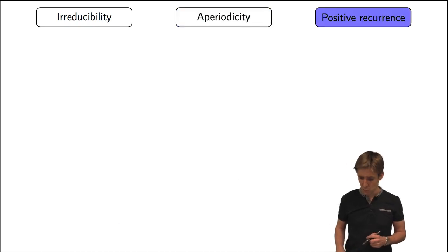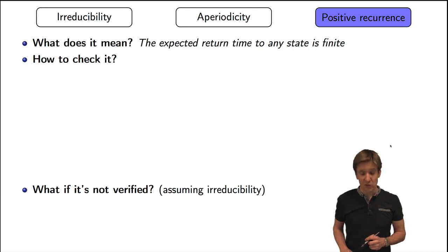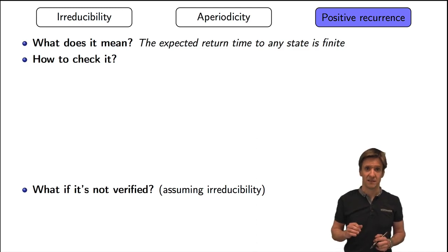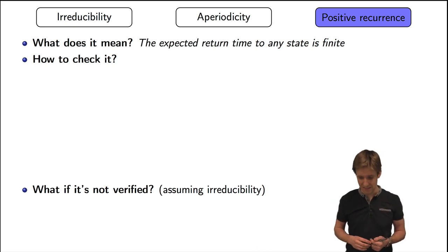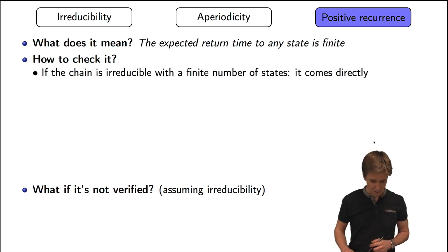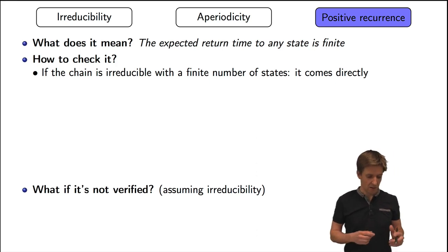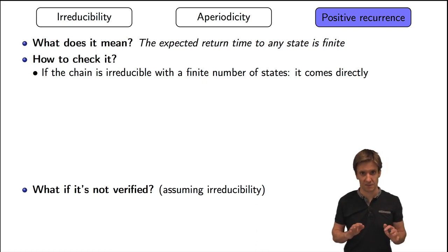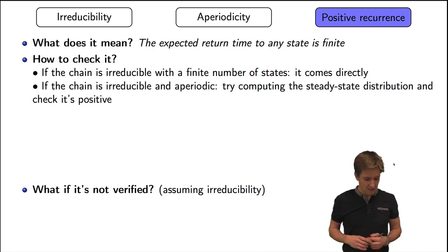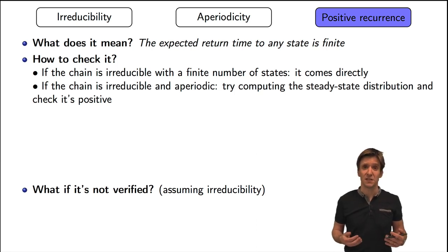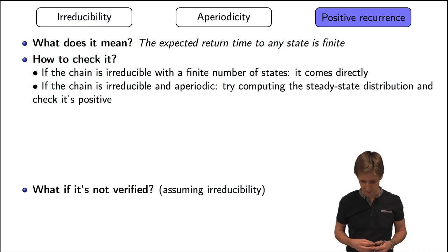Finally, the last condition we want is positive recurrence. It means that if I'm in a given state, the expected time before I go back to that state again is finite. That's not always easy to check. If the chain is irreducible and the number of states is finite, this property comes for free — you have nothing to do. But if the chain has an infinite number of states, it can get more complicated.